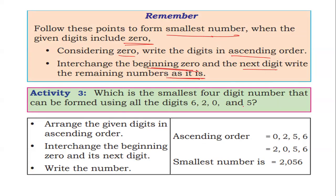For example: which is the smallest 4-digit number that can be formed using all the digits 6, 2, 0, and 5? By using our property, we write the digits in ascending order and interchange the leading 0, giving us 2, 0, 5, 6 — that is 2056, which is the smallest number.